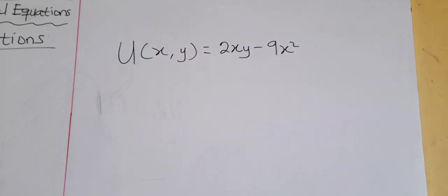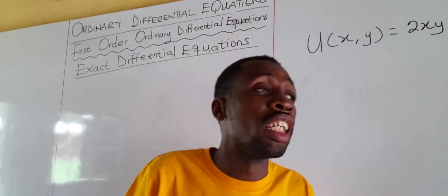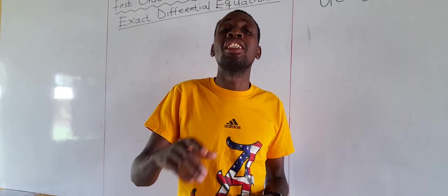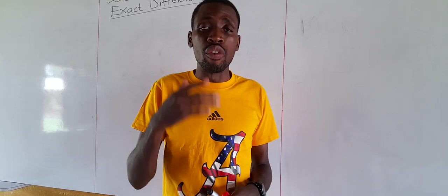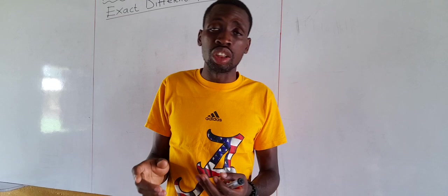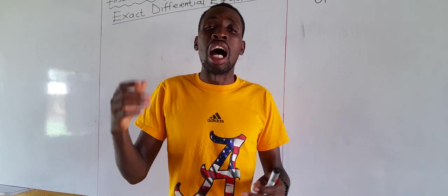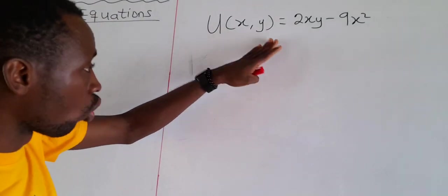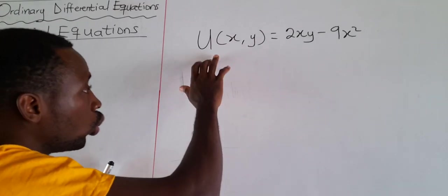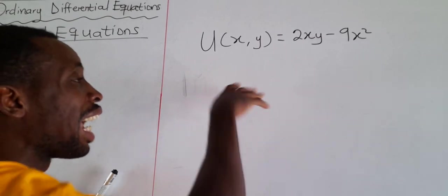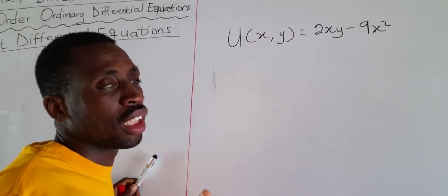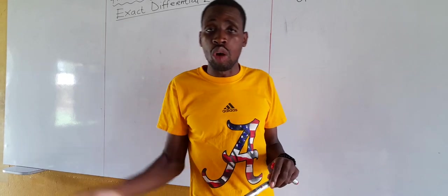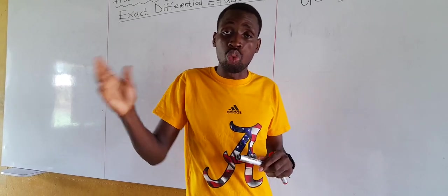Before we can solve exact and non-exact differential equations, you need to know how to do partial differentiation as well as direct integration. We will revise partial differentiation and direct integration so that solving exact and non-exact equations will be easy. When we have a function dependent on x and y and we find a partial derivative with respect to one variable, the other variable is kept constant. So if differentiating with respect to x, y is kept constant, and vice versa.